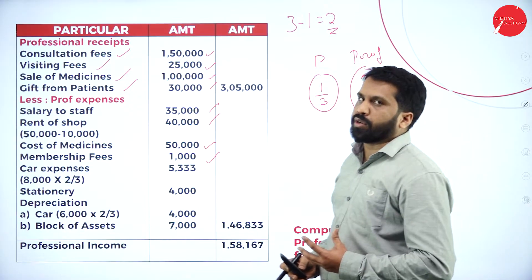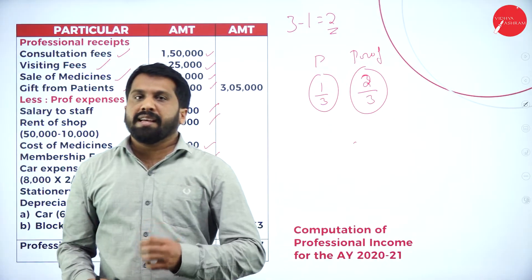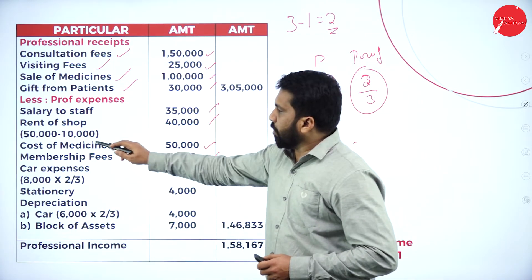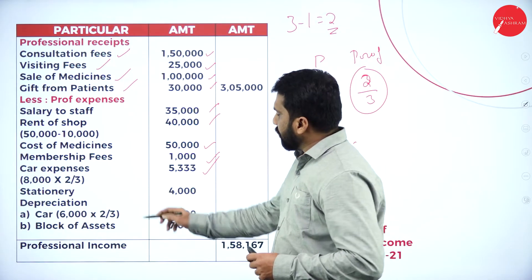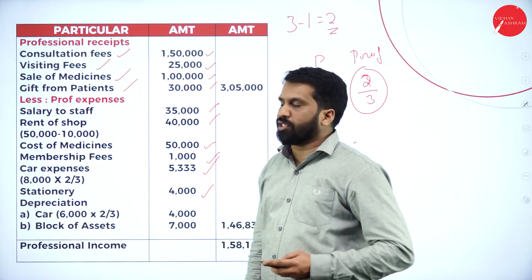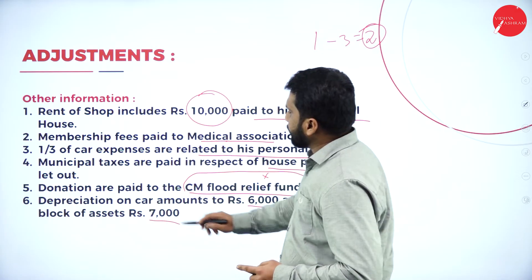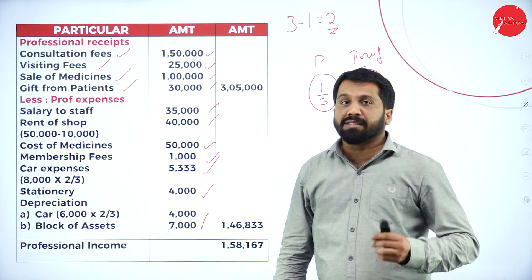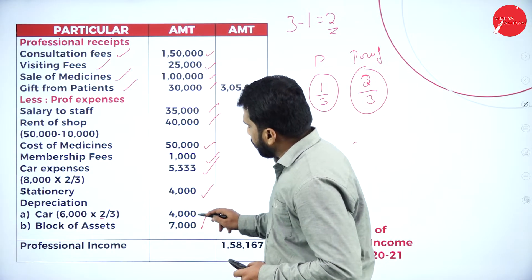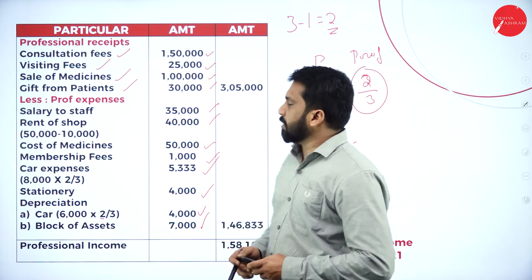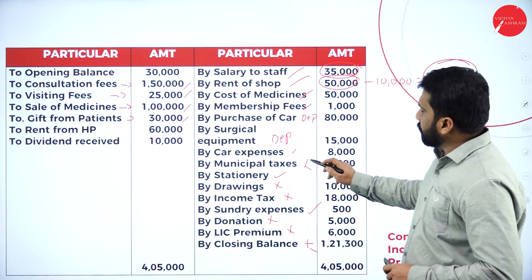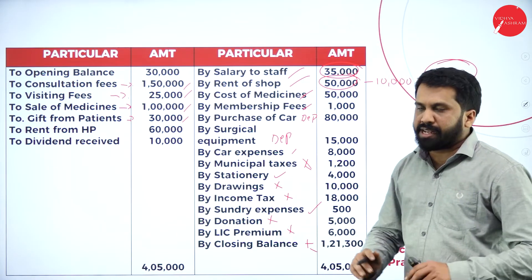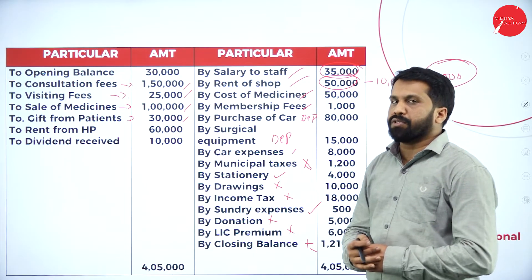So wherever you find depreciation on car, repair on car, or fuel for car — any expenses on car — you always go for 2 by 3 for this particular problem. We have not taken municipal tax, drawings, income tax, donations, LIC, or closing. This much only you are supposed to do in profession. You should be familiar with the headings which are professional and which are not professional. Just assume you are a medical practitioner — if you can spend on something without being a medical practitioner, then it is not part of your profession, like drawings, income tax, personal things. If you do 3 to 4 problems, you will be familiar with everything, because all problems have similar headings.